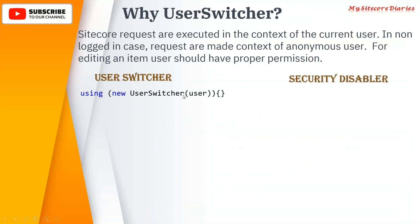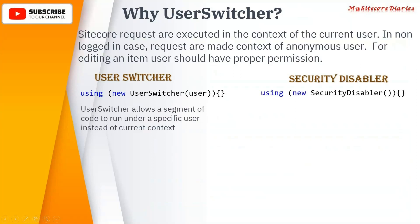This is how you use the user switcher — you pass the new user information which you want to switch to. And this is how the security disabler works. The user switcher allows a segment of code to run under a specific user instead of the current context. Whatever scope you have, that line of code will be executed under the user you are passing to the user switcher.